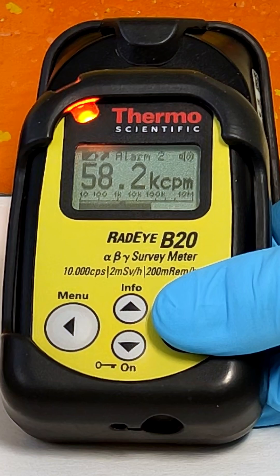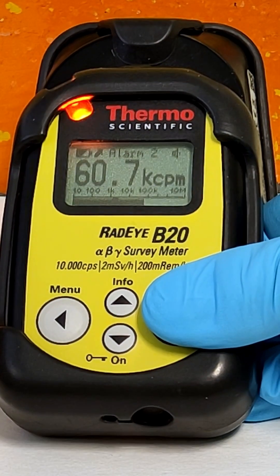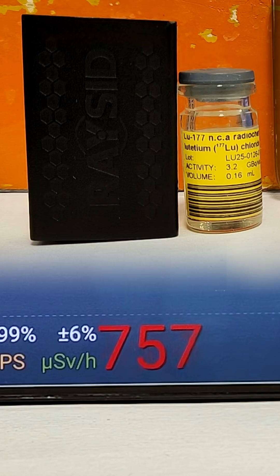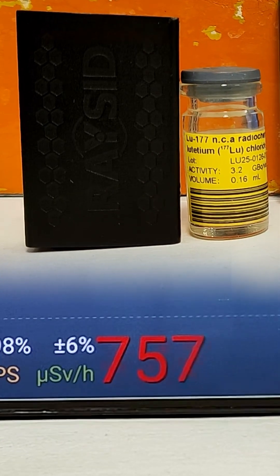Despite that, the vial still read pretty high on the RadEye B20 with over 60 counts per minute and registered over 760 microsieverts an hour on the RadEye Set.